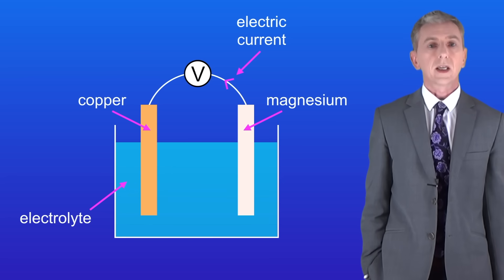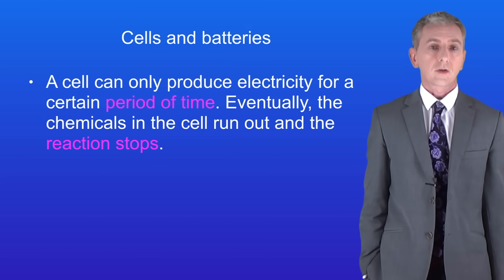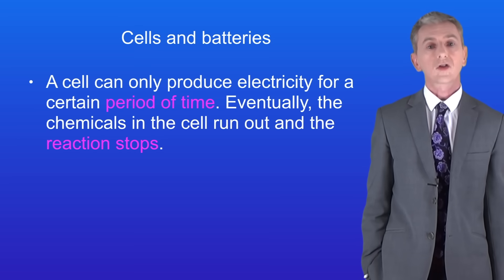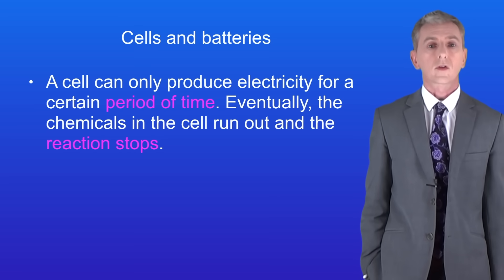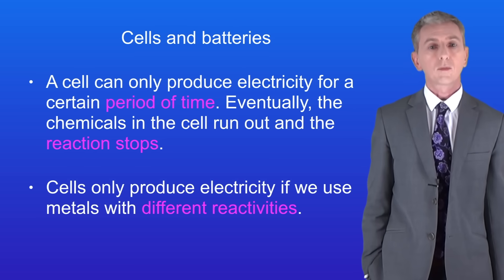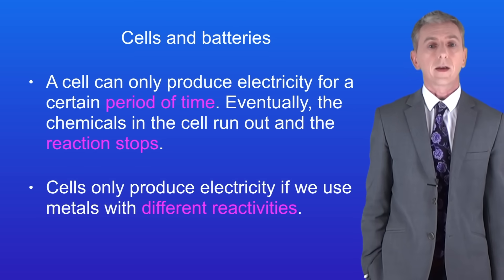Now here are a couple of key points. Firstly, a cell can only produce electricity for a certain period of time because the chemicals in the cell eventually run out and the reaction stops. Secondly, cells only produce electricity if we use metals with different reactivities. So we're going to look at that now.